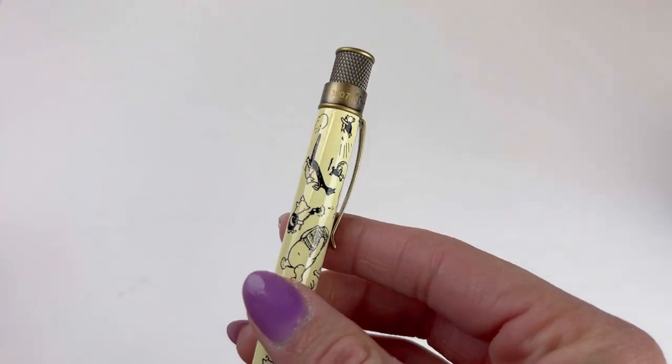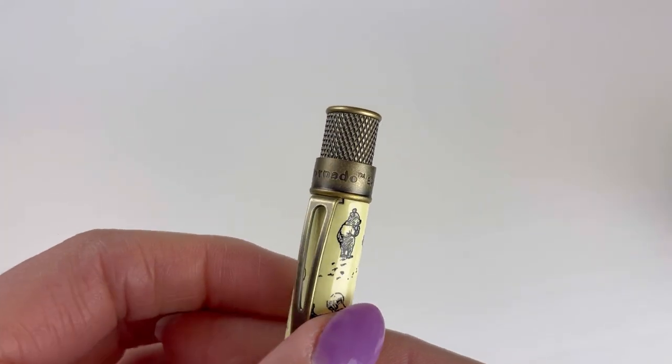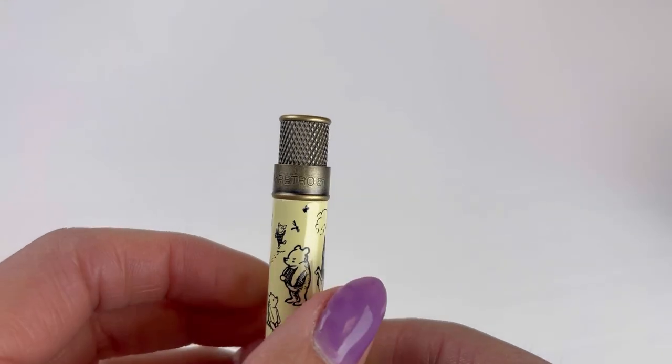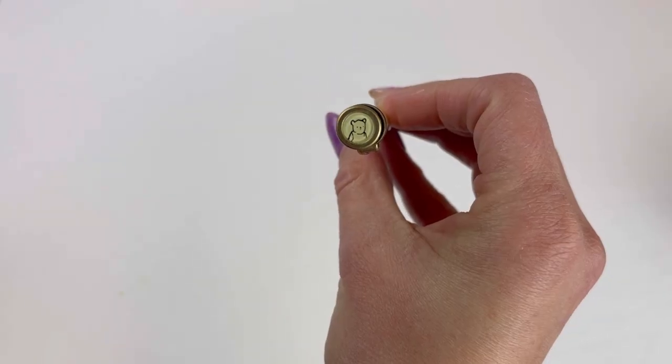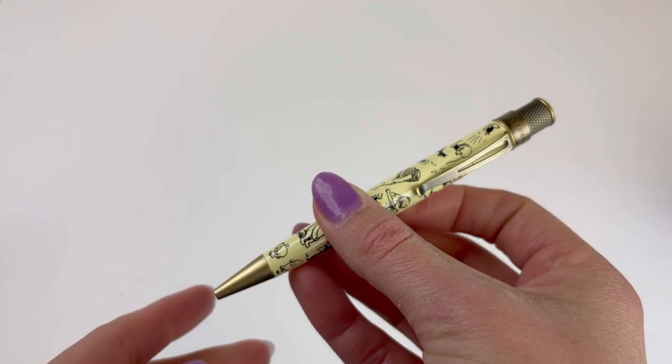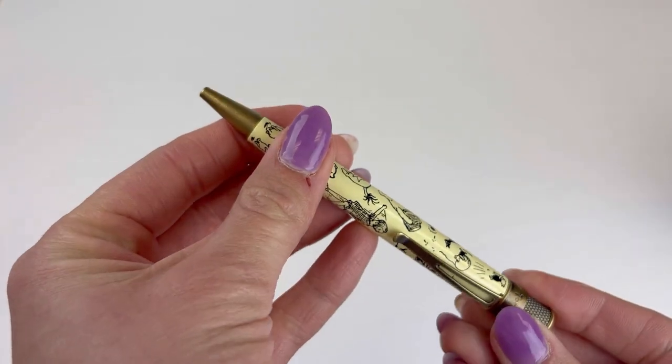Then there are the brassy appointments, and it's got the Retro name and your number of the pen on the top ring and your silly old bear on your top disc.